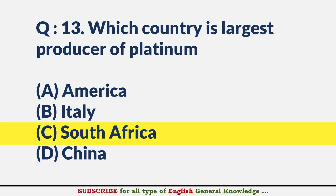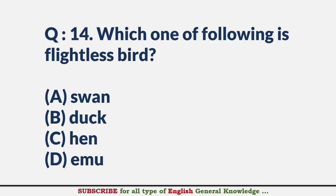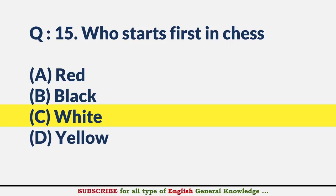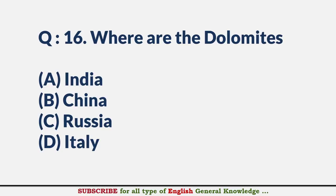Which one of the following is a flightless bird? — Answer D: Emu. Who starts first in chess? — Answer C: White. Where are the Dolomites? — Answer D: Italy.